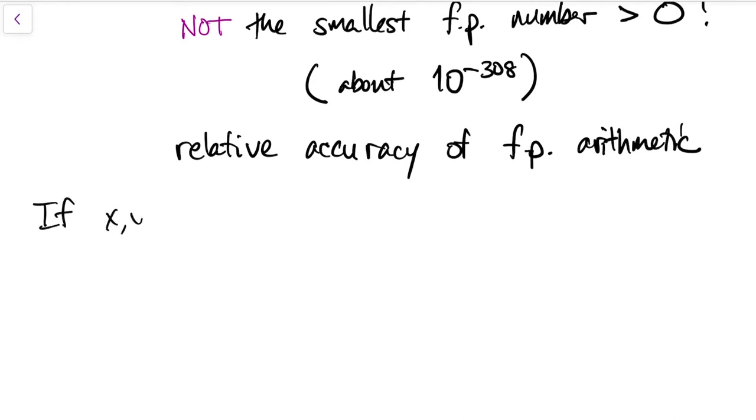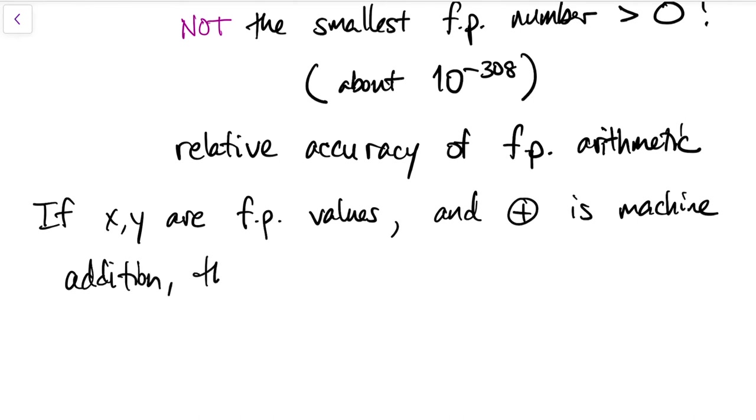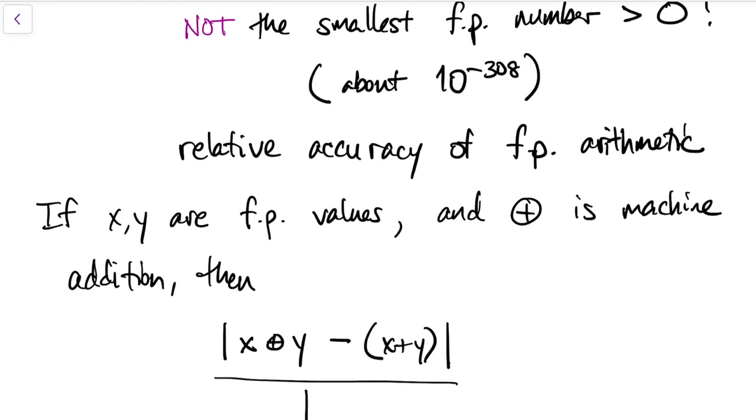We won't get deep into the details, but the idea is that if you have two floating point values, and you have a machine analog of addition, so we'll say circle plus, then the relative difference between the machine addition and the true sum is, again, bounded by machine epsilon.